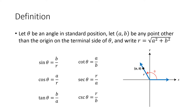Here's the definition. When we have an angle in standard position, we want to pick a point (a, b) that's on the terminal side of that angle, and then we write r to be the square root of a squared plus b squared. r is just the distance from the origin to that point — from (0, 0) to (a, b) — using the distance formula.